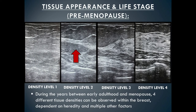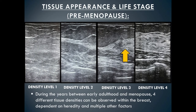In density level two, we start to see more distinct areas of dense glandular tissue within the fat. The breast is still primarily fatty tissue, with 25 to 50 percent of it being glandular tissue. In density level three, the breast starts to become more glandular tissue than fat, with 50 to 75 percent of the tissue being glandular tissue.